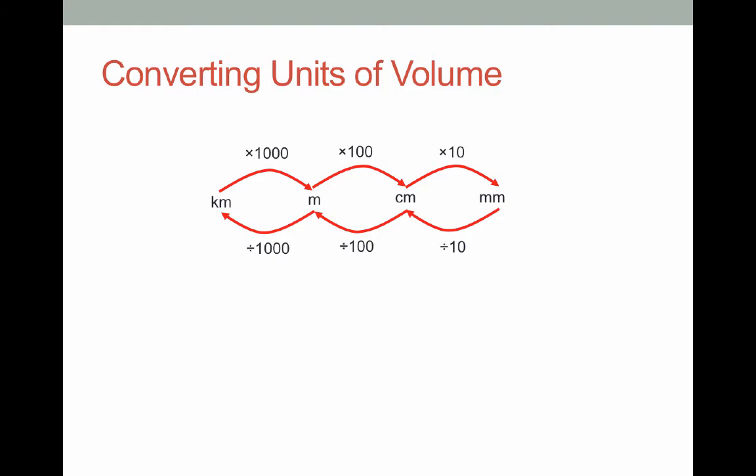Well because these are converting units of volume we're going to be multiplying or dividing these units by themselves three times. So this is the diagram that's going to allow us to convert cubic kilometers into cubic meters into cubic centimeters and into cubic millimeters or vice versa.